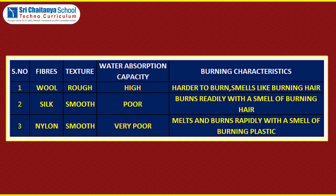Observations: The texture of wool is rough, the water absorption of wool is high, and the burning characteristic of wool is that it is harder to burn and smells like burning hair. The texture of silk is smooth, the water absorption capacity of silk is poor, and the burning characteristic of silk is that it burns readily with the smell of burning hair.